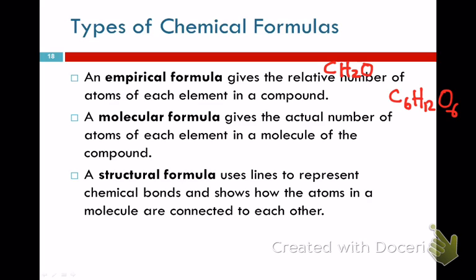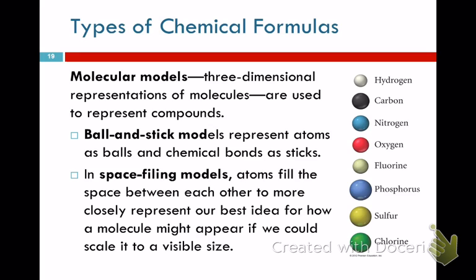Structural formulas use lines or spheres to show the actual shape of the molecule. Ball-and-stick models show the connections; space-filling models show relative atom sizes. In molecule diagrams, colored spheres represent different elements: hydrogen is white, carbon is black, nitrogen is blue, oxygen is red, fluorine is green, bromine is brown, sulfur is yellow.